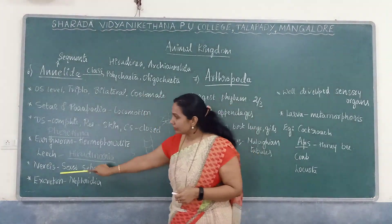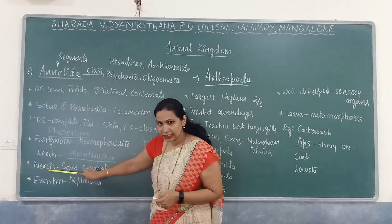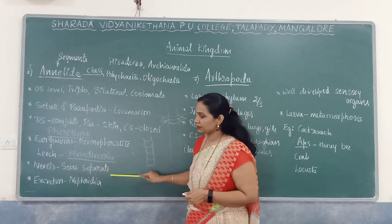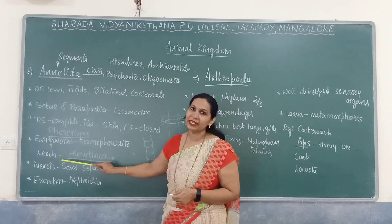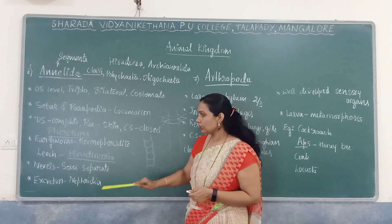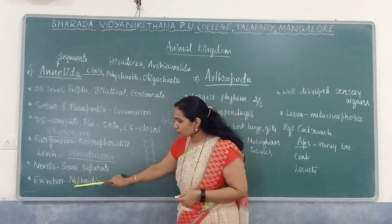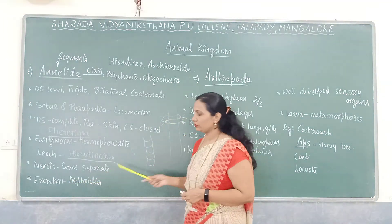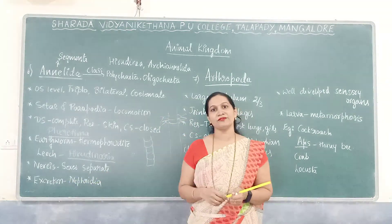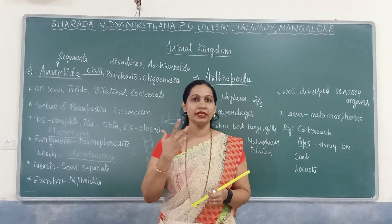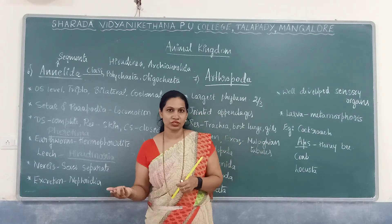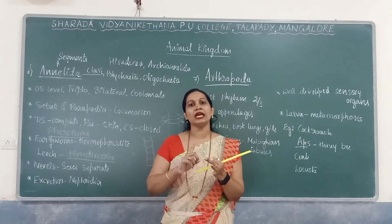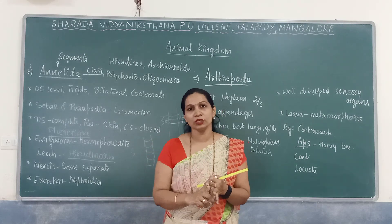In Nereis, an aquatic annelid, the sexes are separate — male and female Nereis can be seen. Excretion takes place through nephridia. Regarding nitrogenous waste, there are three types: ammonia, urea, and uric acid. Different organisms have different nitrogenous waste; in Annelida members the nitrogenous waste is urea.